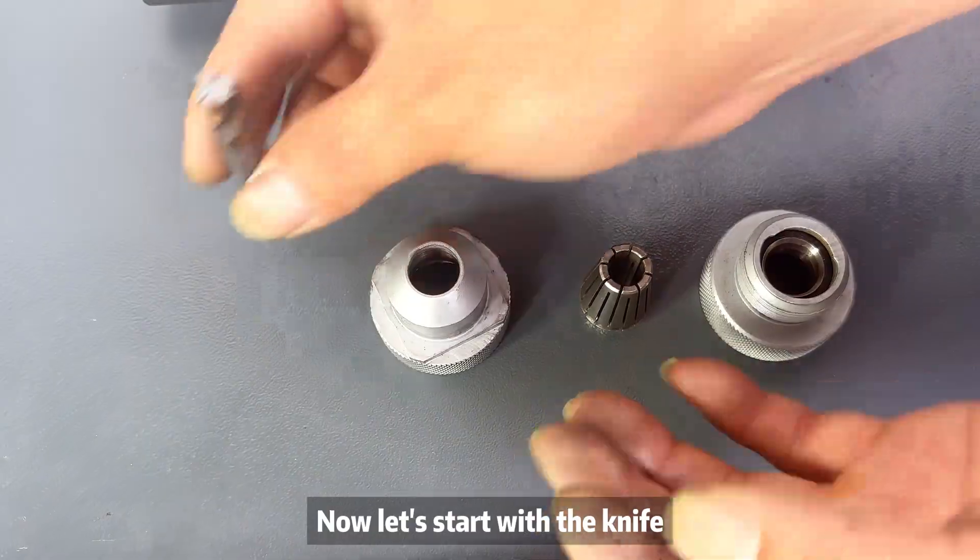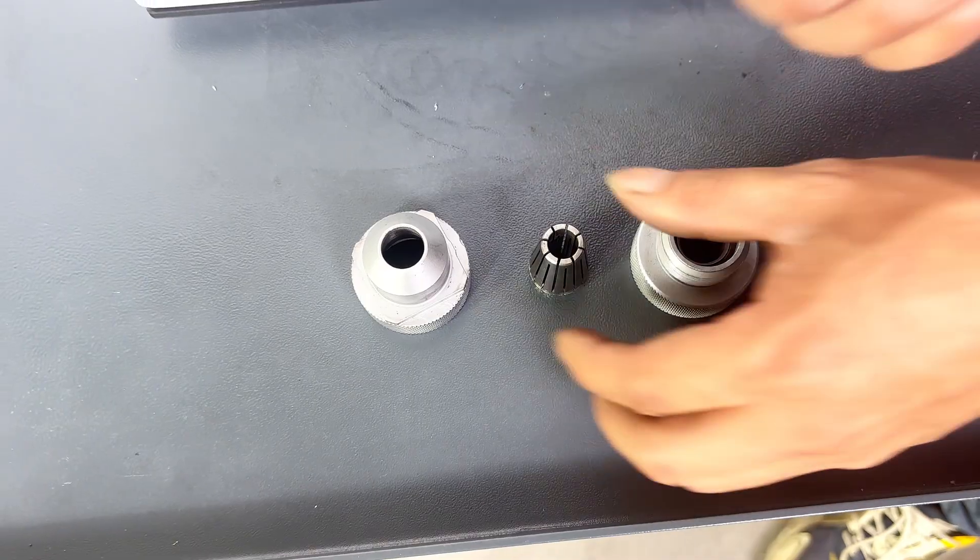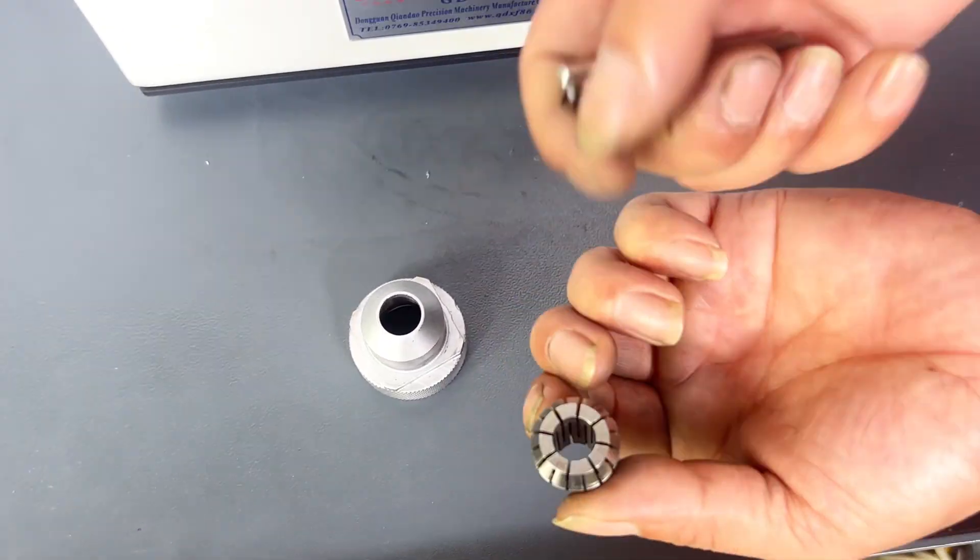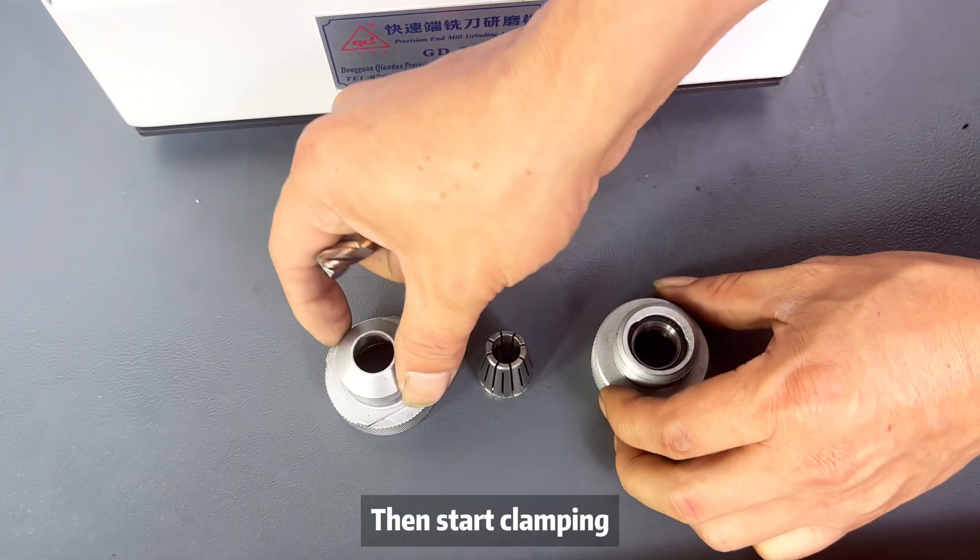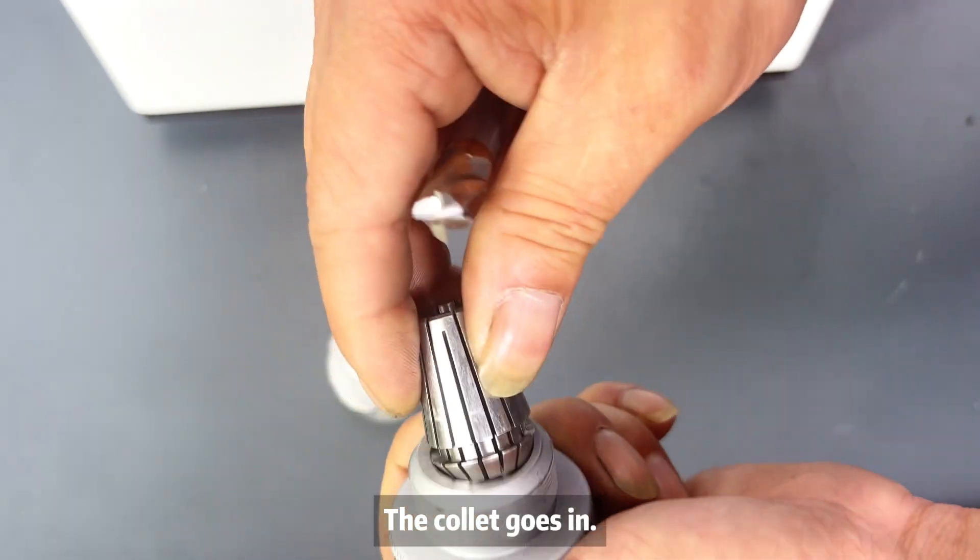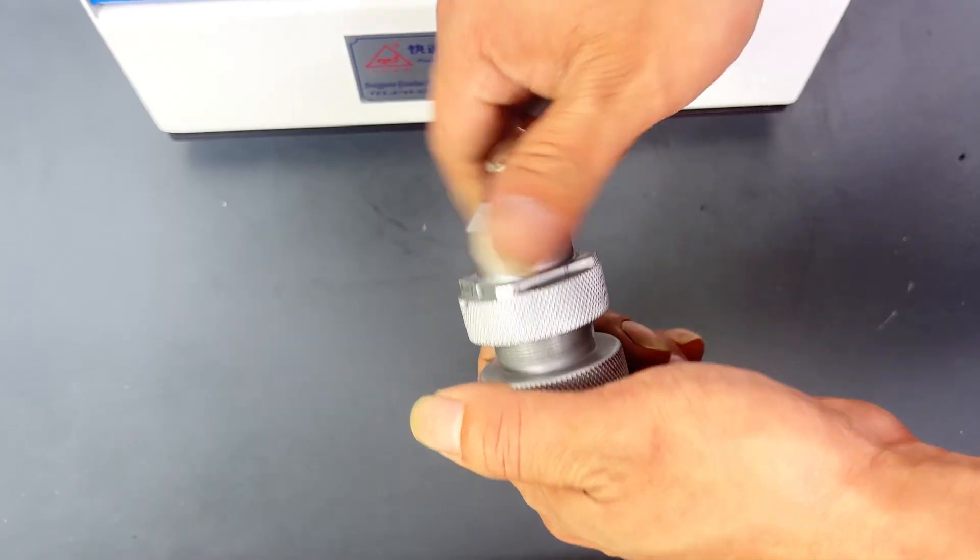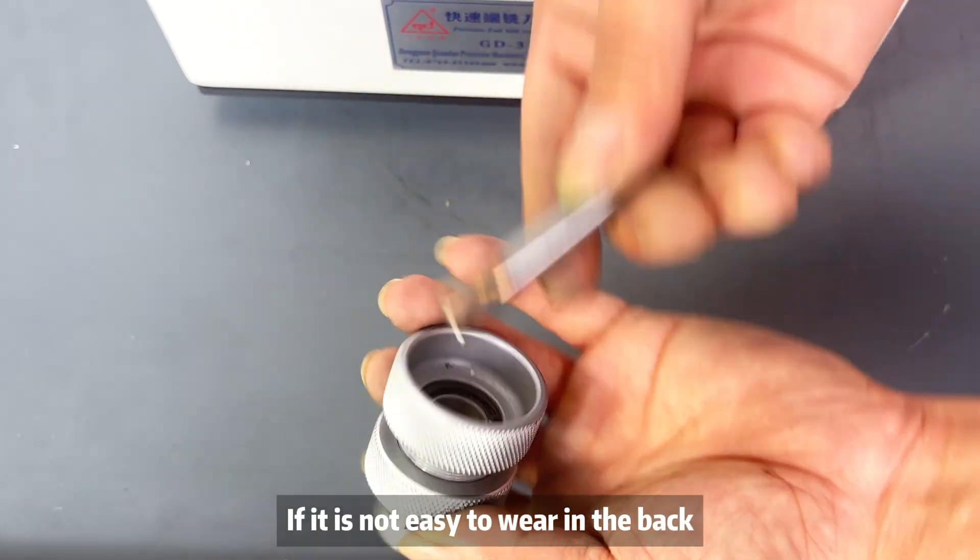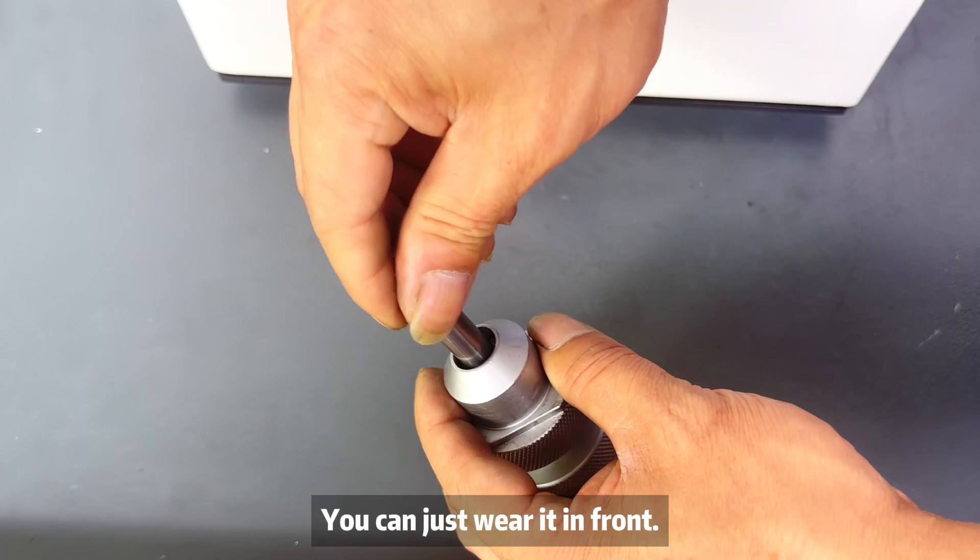Now let's start with the knife. First look at this 10mm. Then start clamping. The collate goes in. If it is not easy to wear in the back, you can just wear it in front.